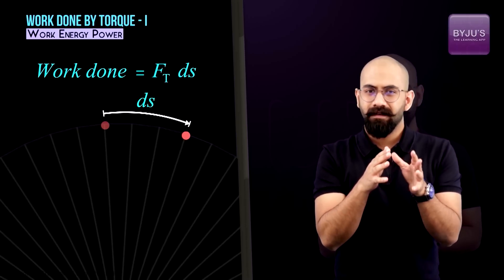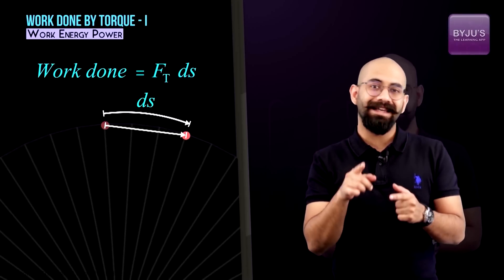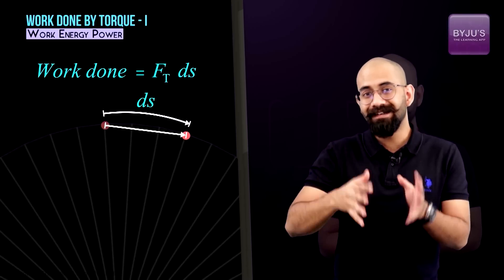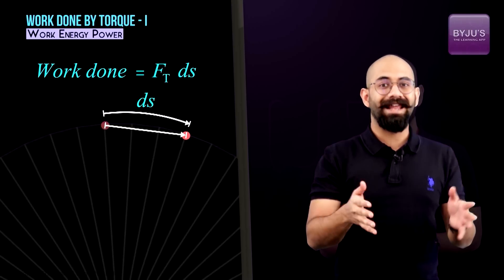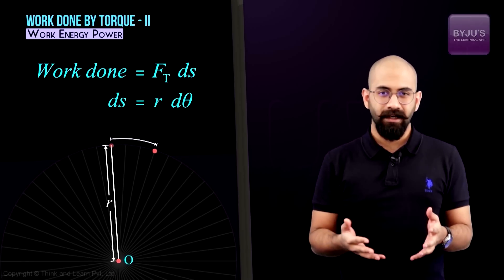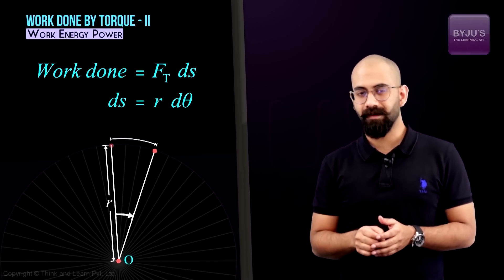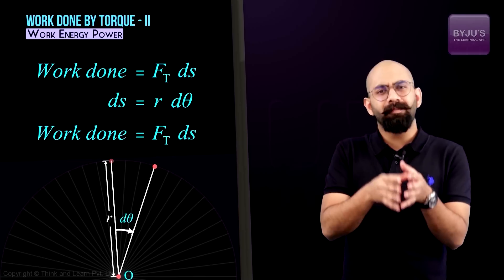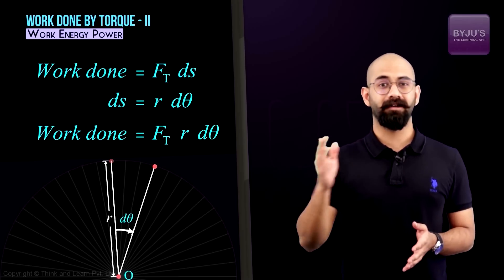One important point: ds is not the magnitude of the displacement vector. The displacement vector is a straight-line vector, whereas ds is the arc length — the distance traveled along the arc. Now, ds is nothing but r times dθ, where r is the radius of the disc and dθ is the change in angle subtended by the point at the center. So we can replace ds with r·dθ, giving work done = Ft × r × dθ.